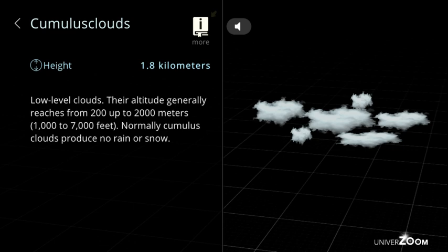Cumulus clouds, height: 1.8 kilometers. Low level clouds. Their altitude generally reaches from 200 up to 2,000 meters, 1,000 to 7,000 feet. Normally cumulus clouds produce no rain or snow.